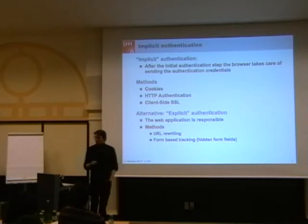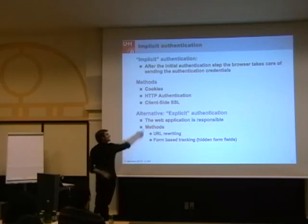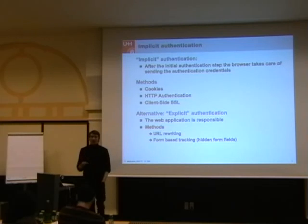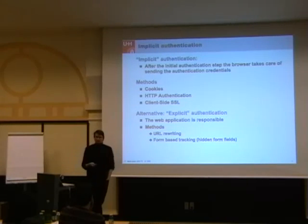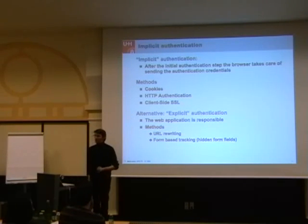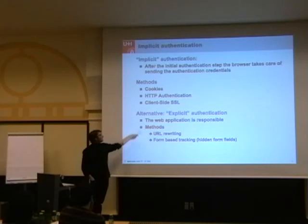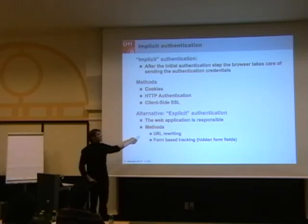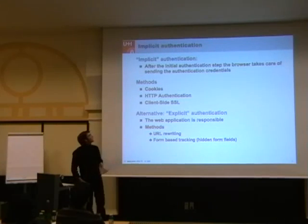There are various methods for authentication tracking. You can have a coarse classification that is good for understanding CSRF: explicit authentication and implicit authentication. Implicit authentication denotes all authentication tracking mechanisms where the web browser takes care of communicating the session identifier or authentication credential without further interaction by the user and without explicit actions by the web application. Methods in this class are cookies, HTTP authentication, and client-side SSL. Those are the three dominating ways to do authentication tracking. You can do it explicitly with URL rewriting — broken by design — or form-based, which creates a horrible user experience. So nobody uses those exclusively, and about 99.99% of all applications use cookies.